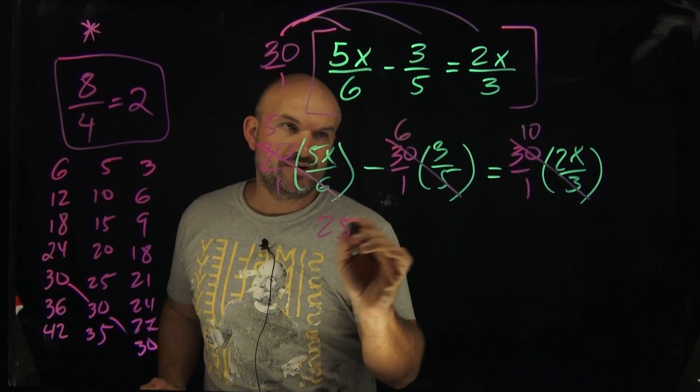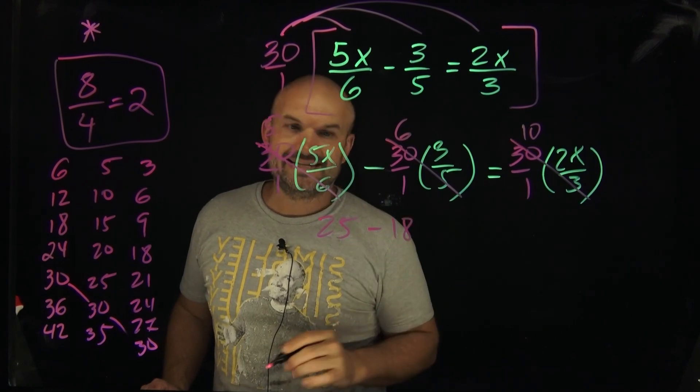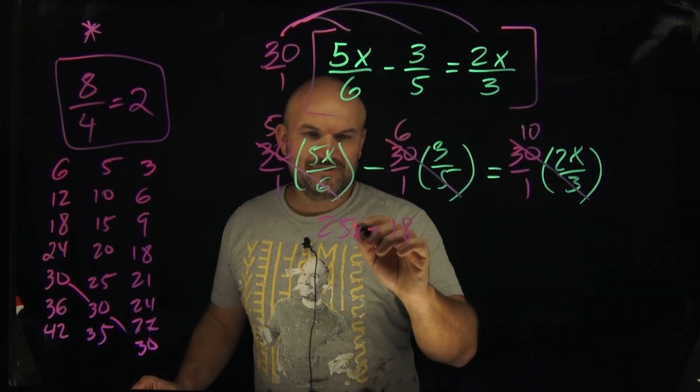So five times 5x is 25x. Negative six or six times three is 18, but it's subtraction, so it's minus 18. Where's there an x? There's my x. Forgot about that variable. Don't forget about the variable.